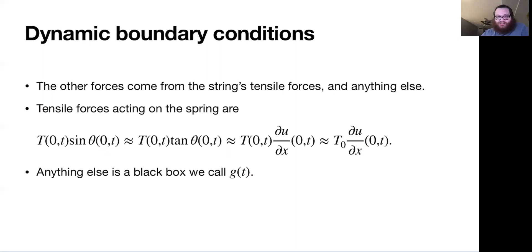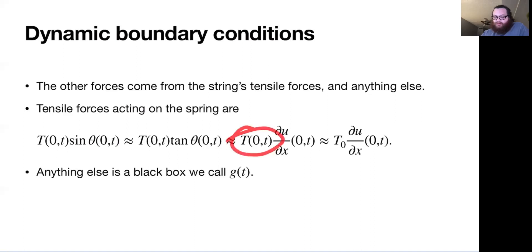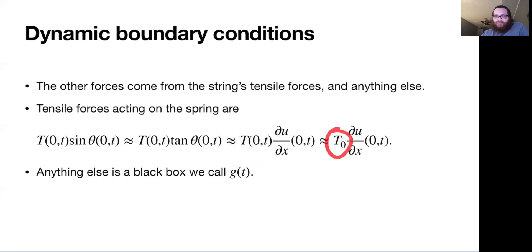We're making these physicist approximations where for a small angle, sine is approximately tangent. The tangent of that angle is approximately the gradient or derivative of the profile of the string. We're also saying that for the strings we care about, this tension force is going to be constant throughout, so we replace this possibly variable magnitude by a constant.